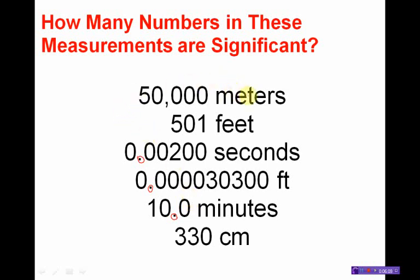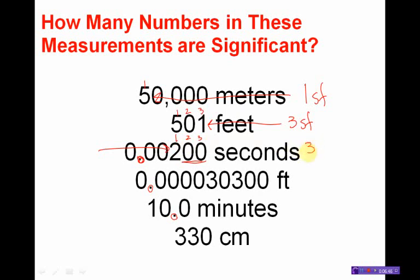5,000 meters — no decimals — I come in from this side and count 1 significant figure. 501 feet — no decimals, no zeros — I come in from this way and count 1, 2, 3 significant figures. I see a decimal place here, so I'm coming in from the left. I go through the zeros and start counting when I hit the 2. I have 1, 2, 3. These last two zeros are important — once you start counting, you don't stop. You count all the remaining numbers. There are 3 significant figures in that measurement.